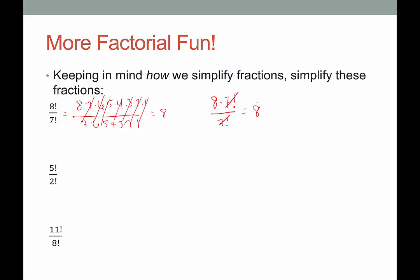What we might do is write out whichever factorial is bigger — 5 is bigger than 2 in the next example — and expand it until you reach that other factorial, then stop and write it as a factorial. So I'm going to expand 5 factorial to 5 times 4 times 3, and then stop at 2 factorial because that matches the denominator. Cross those out and we're left with 5 times 4 times 3, which is 60.